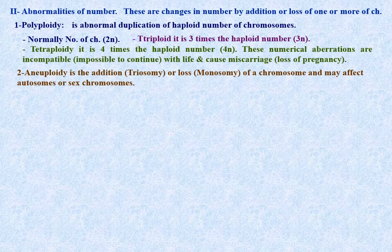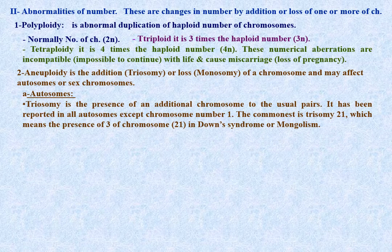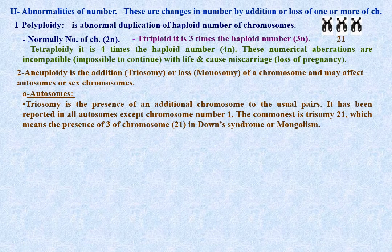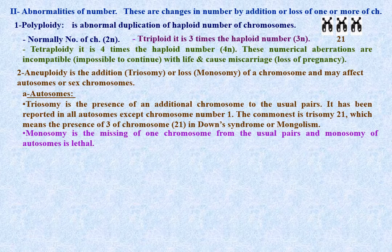Aneuploidy is the addition (trisomy) or loss (monosomy) of a chromosome, and may affect autosomes or sex chromosomes. Autosomal trisomy is the presence of an additional chromosome beyond the usual pairs; it has been reported in all autosomes except chromosome 1. The commonest trisomy is chromosome 21, giving three copies of chromosome 21, causing Down syndrome (mongolism).